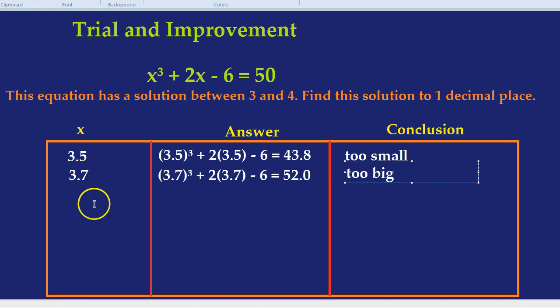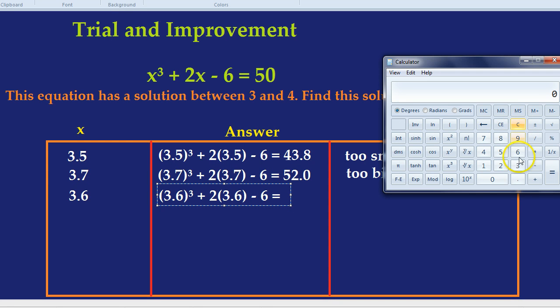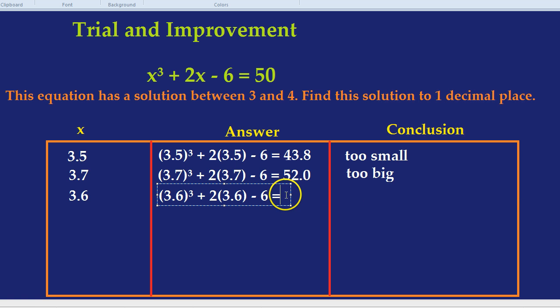I reckon we should try 3.6. So we would do 3.6 cubed plus 2 times 3.6, take away 6. And what does that equal? 3.6 cubed plus 2 times 3.6, take away 6. That's 47.8 or 47.9 if we round off. And what is 47.9? It's too small. We're aiming for 50. It is too small, but we're getting closer. So 3.6 was too small, and 3.7 was too big.